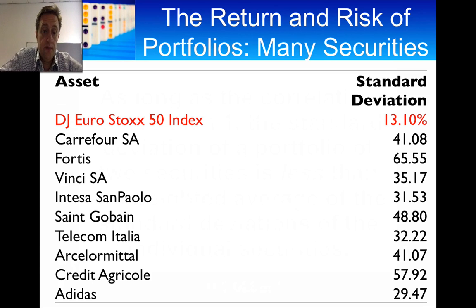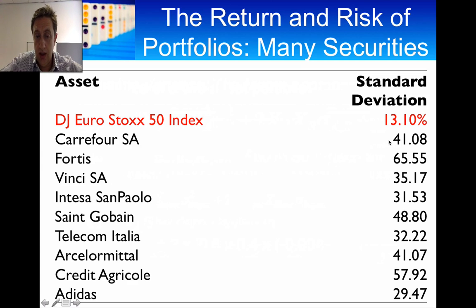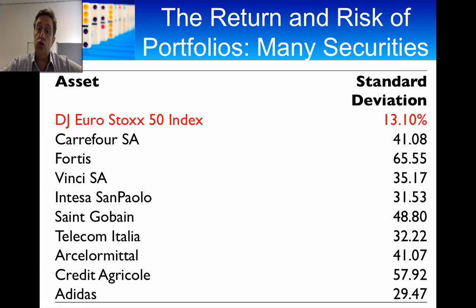I'm going to show you some data. I've looked at the standard deviation of returns for a number of companies in the Euro Stoxx 50 Index — the index of the largest 50 companies traded in Euros. You can see that the individual company standard deviations are massive, but the standard deviation of the portfolio is significantly lower than the standard deviation of the individual securities. I've shown you both mathematically and using real data that bringing assets together into a portfolio improves the risk of your overall investment — that is the diversification effect.